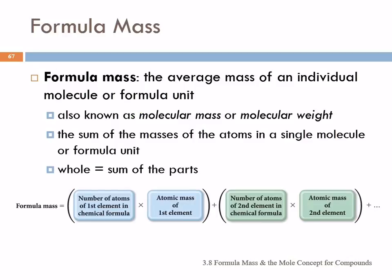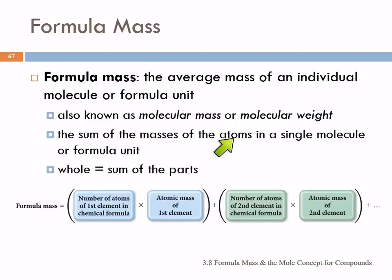Now that we've learned about nomenclature, we've learned that things combine into molecules, or for ionic compounds we call them a formula unit. This is also known sometimes as molecular mass — the mass of a molecule — sometimes still called molecular weight, though that's an older term we're trying to get away from. To figure out the formula mass, we're just going to add up the masses of all the atoms in a single molecule or formula unit, because the mass of the whole is the sum of the parts.